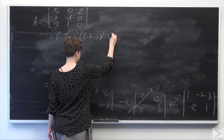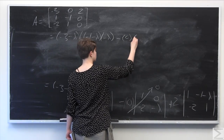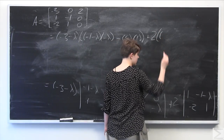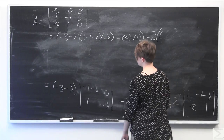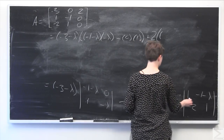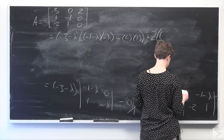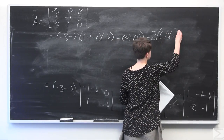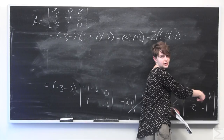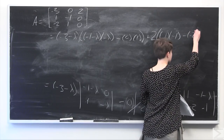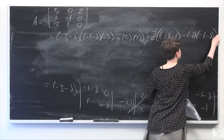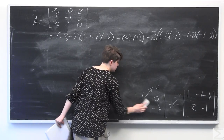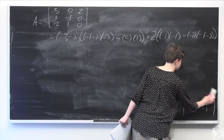Minus 0 times 1, and then plus 2 times 1 times negative 1. So we have 1 times negative 1 minus, and then multiplying negative 2 and negative 1 minus lambda. Now we can simplify and try to factor to find the roots of this characteristic polynomial.